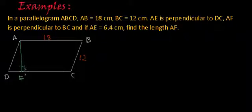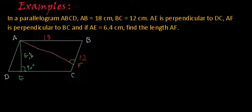And this will be 90 degree. And AF is perpendicular to BC. So if I draw a perpendicular from point A to BC, this will be 90 degree and this will be point F. And they're saying if AE is 6.4 centimeters, find the length of AF.